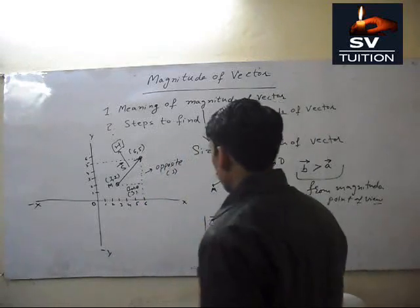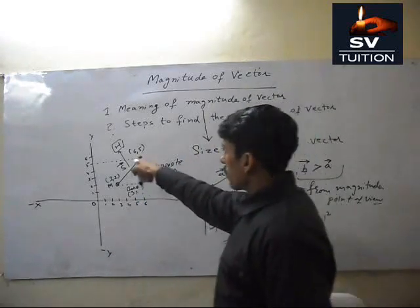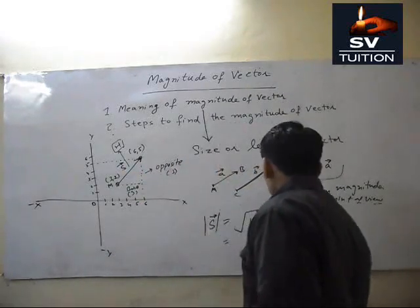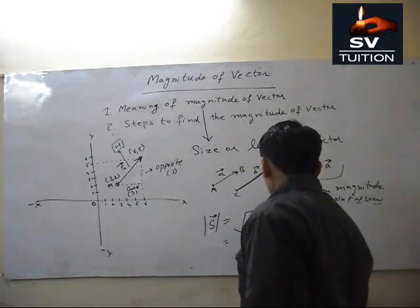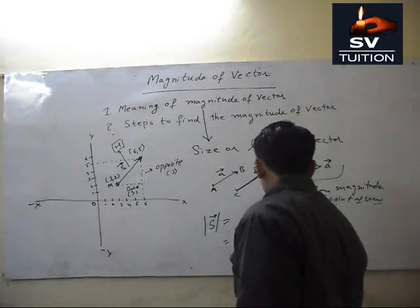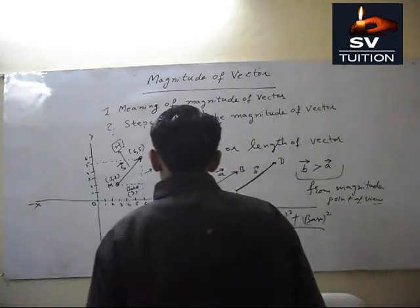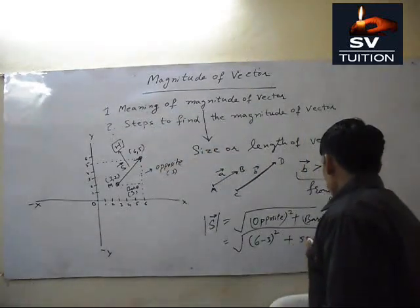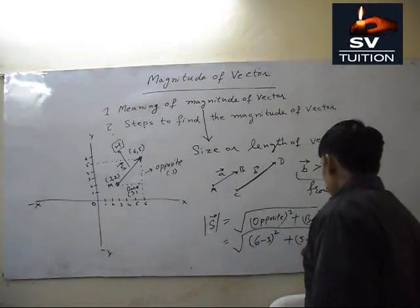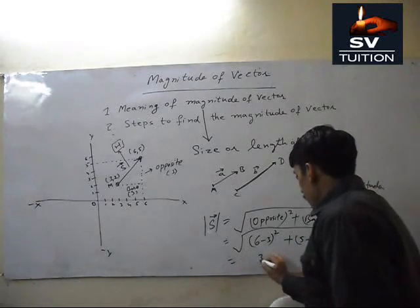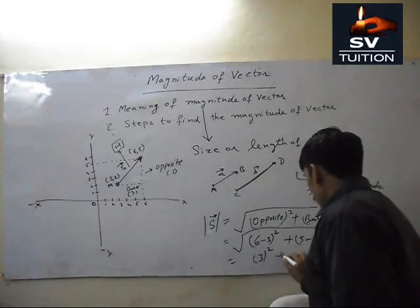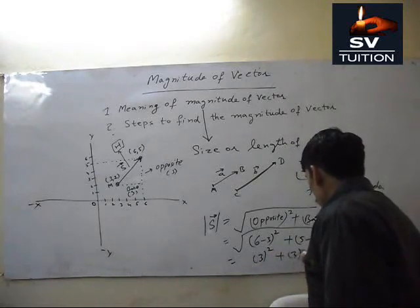We can calculate, either we can write this or six minus three. This is three, power two. And five minus two. This is also three. Five minus two, power three. Three is power two and three is power two.